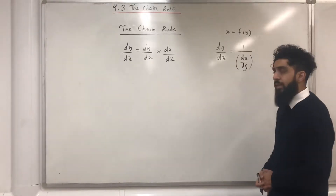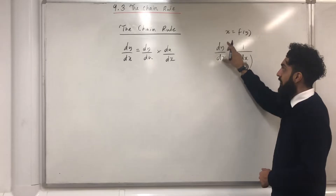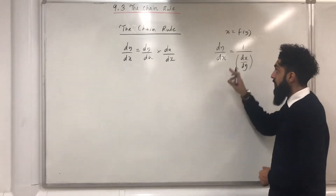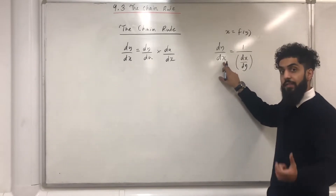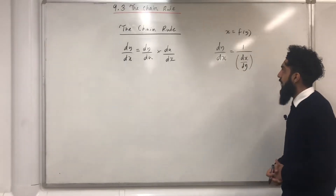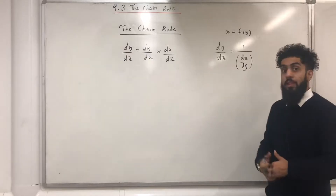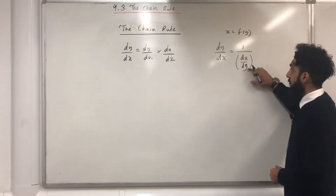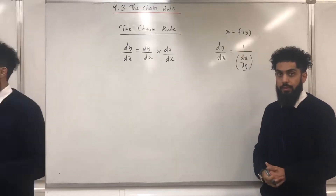Let's focus on the notation dy over dx. What this is trying to say is differentiate y with respect to x, meaning differentiate the x terms. And over here, dx over dy — what this is trying to say is differentiate x with respect to y, so you're differentiating the y terms.